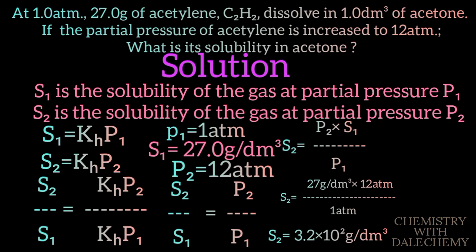Therefore, at 12 atm partial pressure of acetylene, 1 dm³ of acetone will dissolve 3.2 × 10² grams of acetylene.